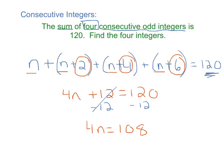120 minus 12 is 108. And now divide both sides by 4. And you should get that n equals 27. And that is not your final answer. That is just our first integer of the 4 consecutive.